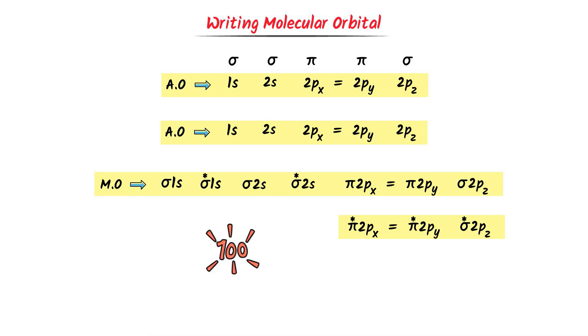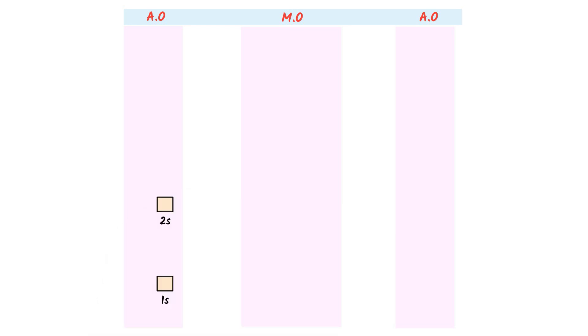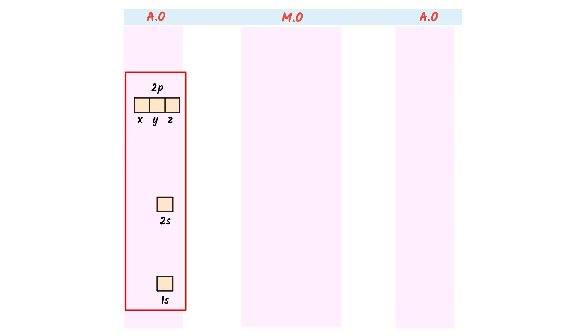Now I will teach you the super easy trick to draw the molecular orbital diagram. I write atomic orbitals on the left-hand side and atomic orbitals on the right-hand side. When they combine, they form molecular orbitals in between. I write 1s — it can accommodate 2 electrons — then 2s, which accommodates 2 electrons, then 2p, which accommodates 6 electrons, with 2px, 2py, and 2pz. If you have learned writing these atomic orbitals, you have already learned 90% of the molecular orbital diagram.